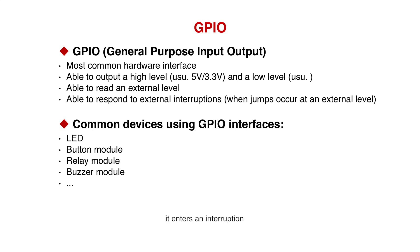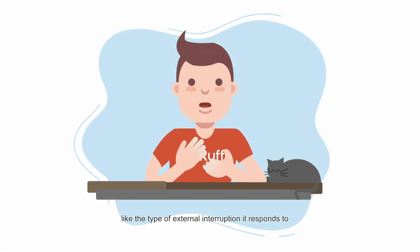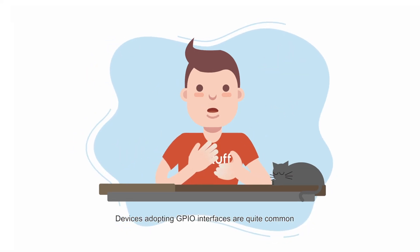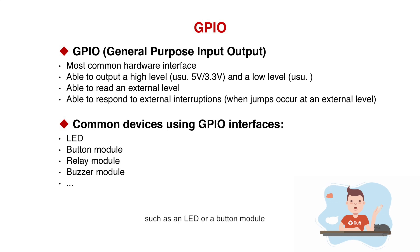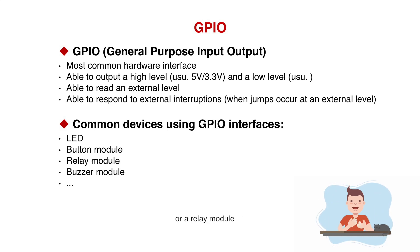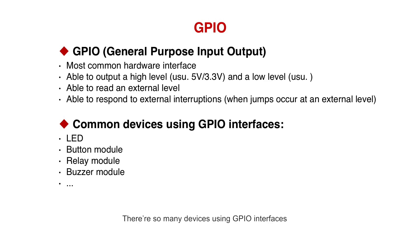Whenever a jump in an electrical level occurs, it enters an interruption. We can set all of these up in the API, like the type of external interruption to respond to. Devices adopting GPIO interfaces are quite common, such as an LED or a button module, a relay module, or a buzzer module. There are so many devices using GPIO interfaces.